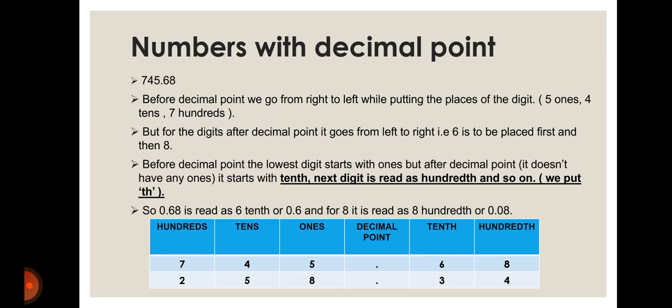Now we move from whole numbers to numbers with a decimal point — for example, 745.68. Before the decimal point, we assign place values going right to left: five is ones, four is tens, seven is hundreds. After the decimal point, we go left to right. The first position after the decimal is tenths, the next is hundredths, and the third is thousandths — note the 'th' suffix distinguishing them from whole-number places.